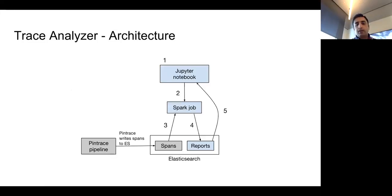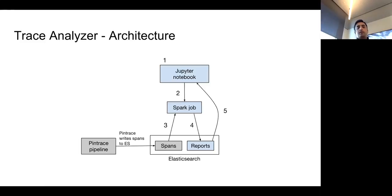Here's the architecture of the Trace Analyzer. For the UI, we use Jupyter Notebooks — a tool familiar to engineers at Pinterest. Users provide parameters, which triggers a Spark job. The Spark job reads spans from Elasticsearch, does processing and analysis, builds a report, and writes it back to Elasticsearch. The Jupyter notebook then reads and displays the report. The whole process can take seconds to minutes, and the user gets an email when it's ready.